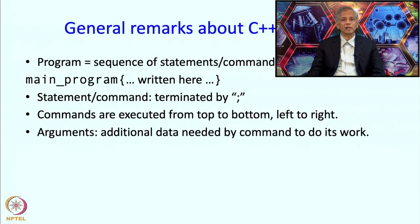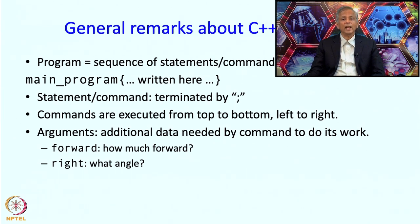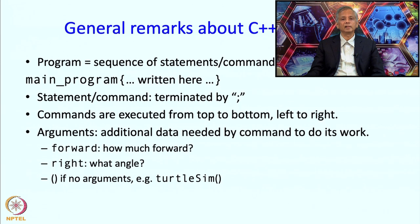Some statements require additional data for them to do their work. For example, if I write forward, I need to tell the computer how much I want to move forward — such data is called an argument. Similarly, right needs to be told how much angle. There can be commands which require more than one argument, and there can be commands which do not require any argument at all. Turtle_sim, for example, did not require any argument, and so in that case we just put the opening and closing parenthesis immediately.